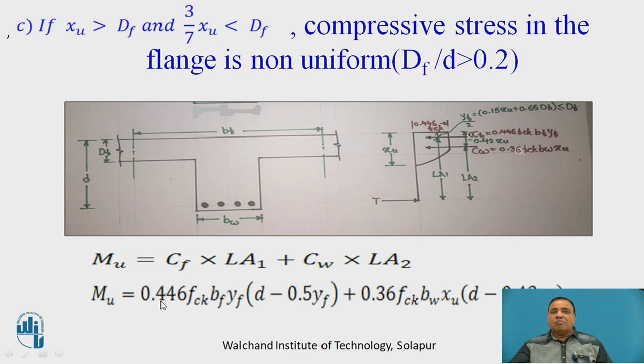Cf is compression force in flange. It is 0.446 FCK into Bf into Yf, that is the portion of flange which is stressed having compressive stress, into D minus 0.5 Yf, this is lever arm 1 LA1 as shown in figure. Similarly, Cw is compressive force in web. It is 0.36 FCK Bw into Xu into D minus 0.42 Xu. This is how you are supposed to find out the depth of neutral axis and Mu for different cases.